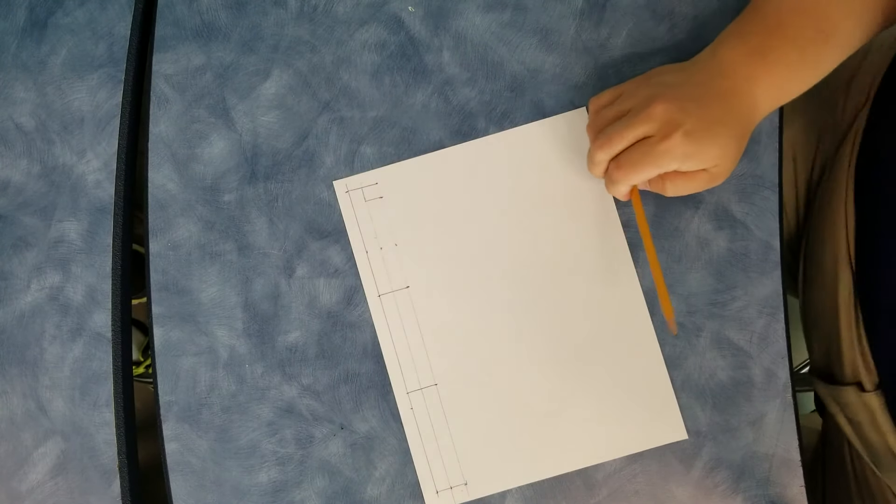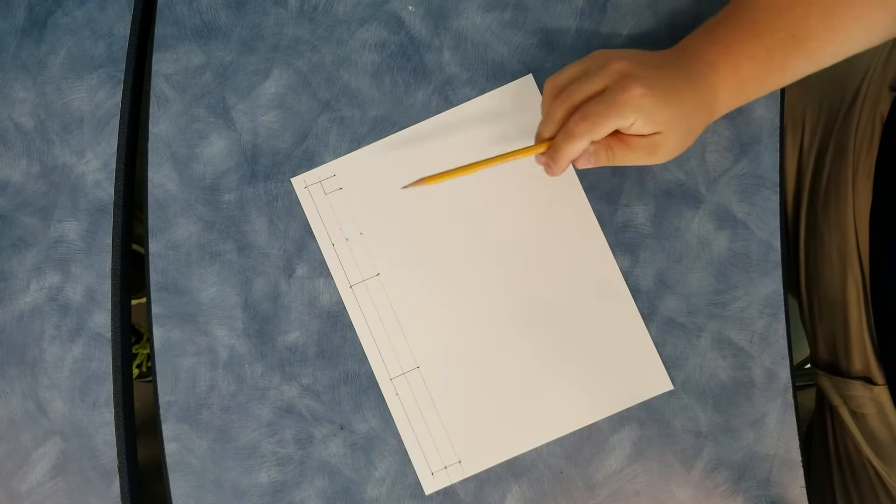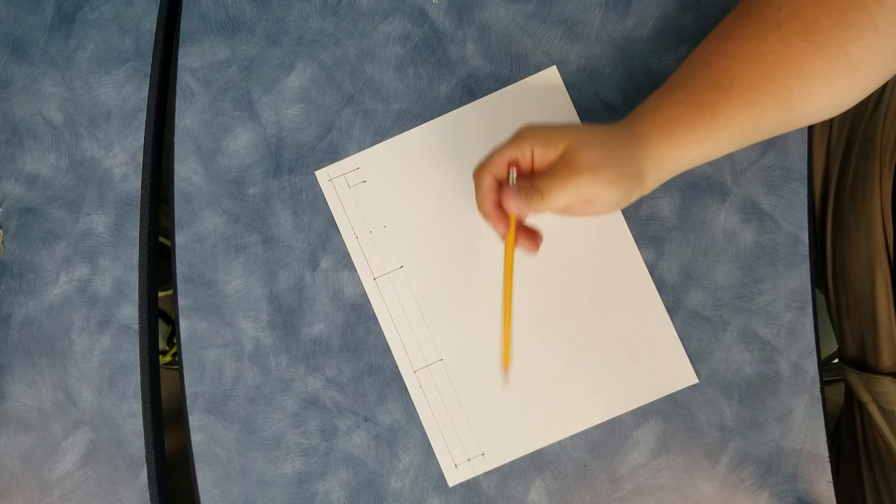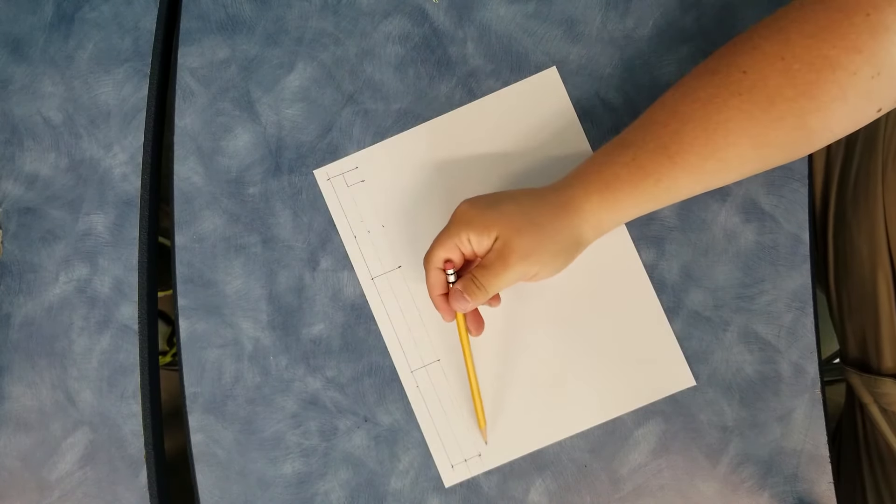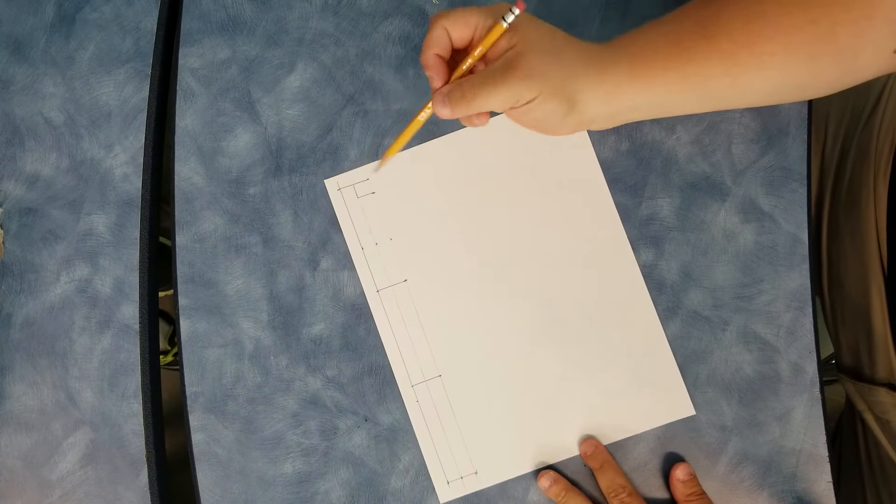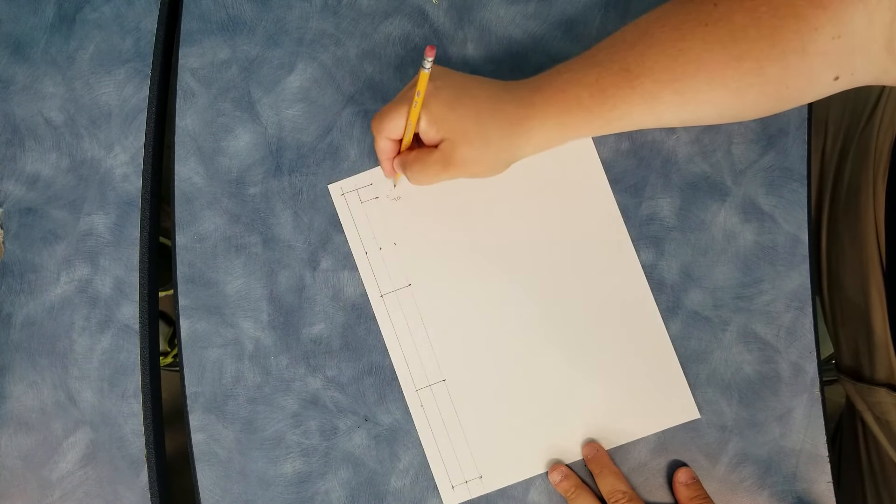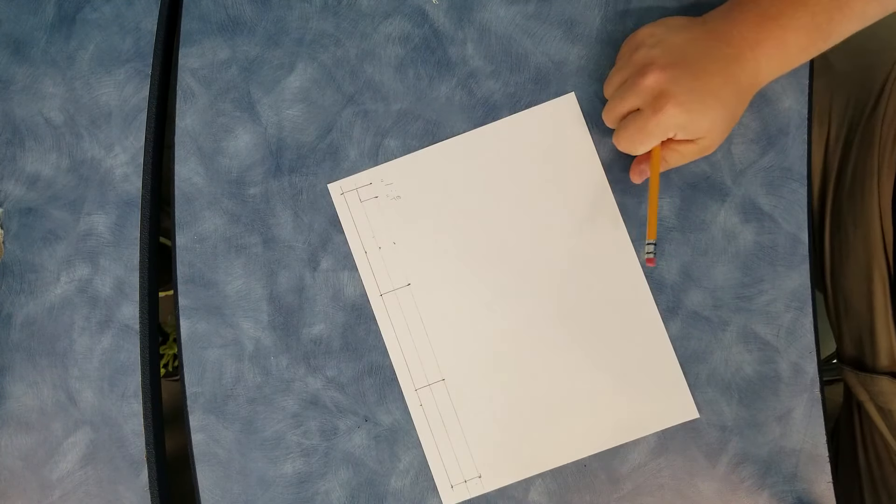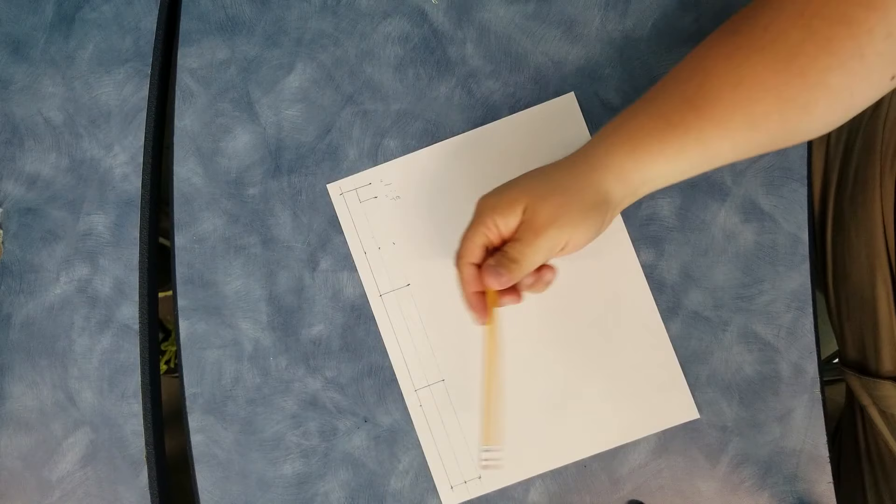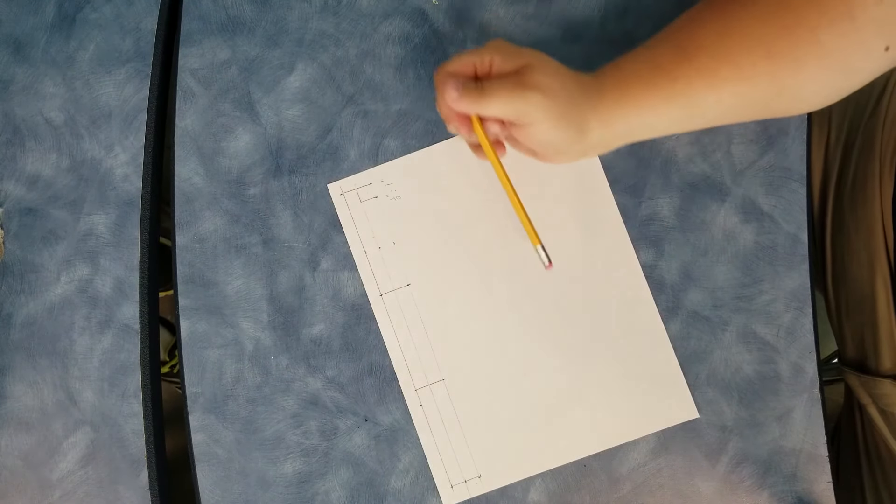The first thing we're going to do is lay out the horizontal lines that go across here. We worked out yesterday in class that if we scale it down to 1½ inch on here equals 1 inch in real life, that means the 3 inches tall becomes 1½, and the 4 inches wide becomes 2 inches.